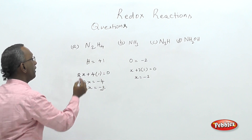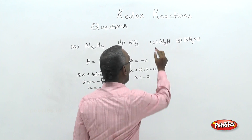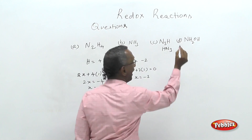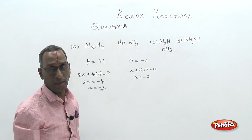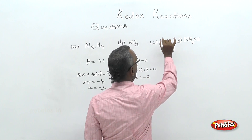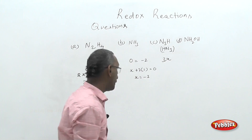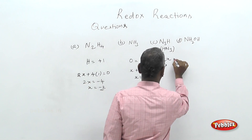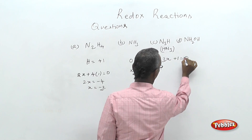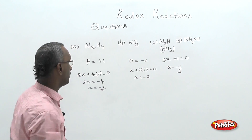For hydrogen azide (HN₃), nitrogen is electronegative and hydrogen is electropositive. With 3 nitrogen atoms at oxidation state x and 1 hydrogen at +1: 3x + 1 = 0, giving x = −1/3.